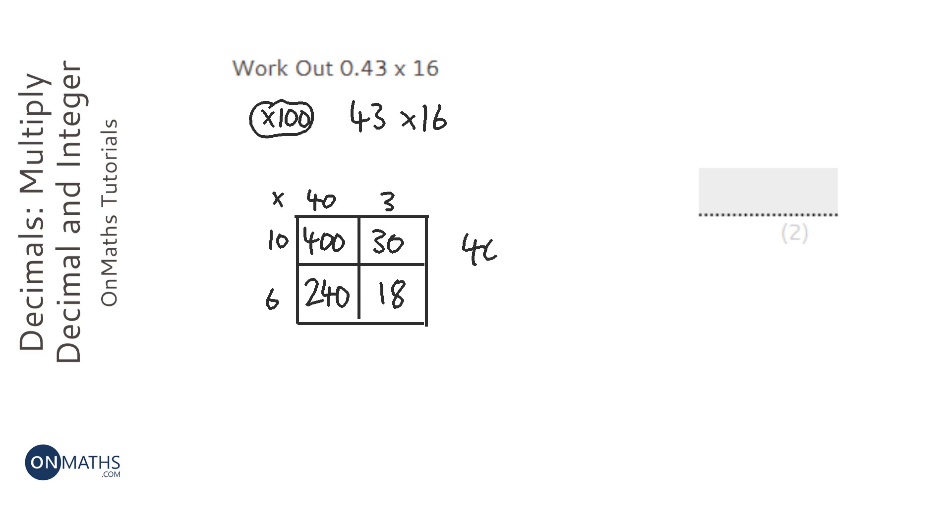I'm going to add those up: 400 plus 30 plus 240 plus 18. So that's going to give me an 8 there, that's going to give me an 8 there, and that's going to give me a 6.